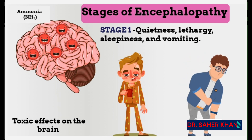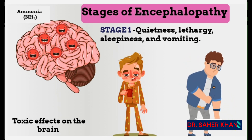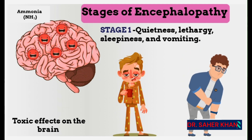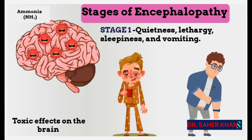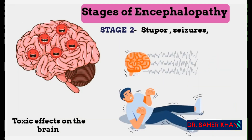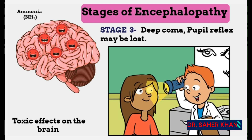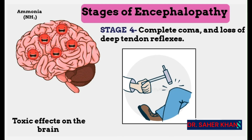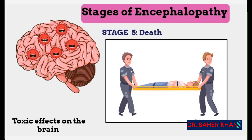The stages of encephalopathy in Reye's syndrome are progressive and alarming. Initially, a child may show mild symptoms such as lethargy, drowsiness, and vomiting. As the condition progresses, symptoms escalate to confusion, irritability, and seizures. By the third stage, pupil reflexes may be lost, indicating severe brain dysfunction. In advanced stages, the child can slip into a coma, and without prompt treatment, this condition can lead to death.